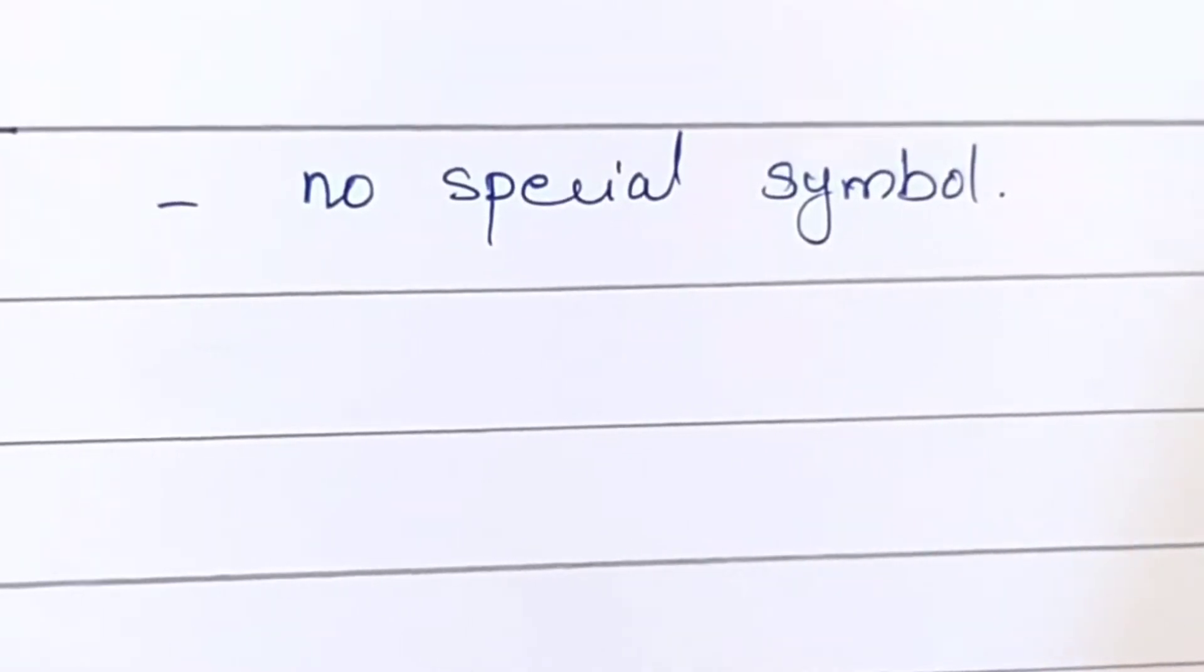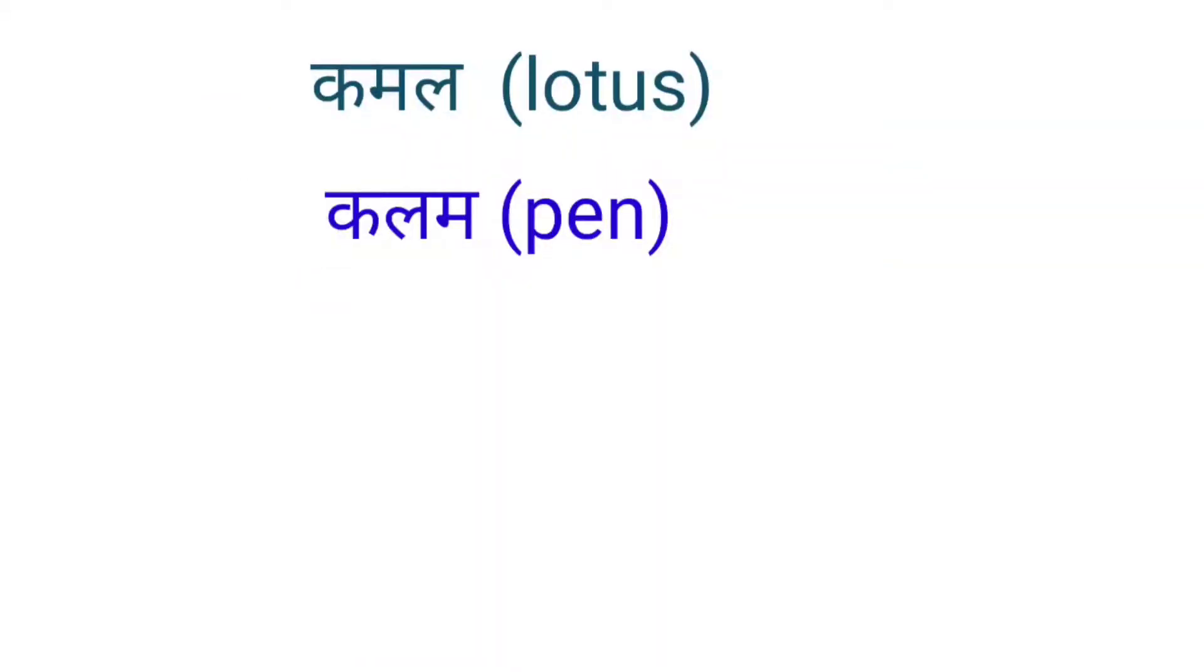The first vowel is A. No special symbol for this sound. Ka, Cha, Dha, Ma. Kamal, Kalam, Bhavan, Sadak, Garam.